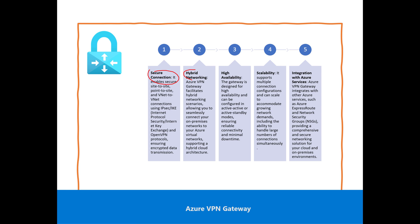Azure VPN Gateway also offers high availability — the gateway is designed for high availability and can be configured in active-active or active-standby mode, ensuring reliable connectivity and minimal downtime. It also supports scalability, with multiple connection configurations that can scale to accommodate growing network demands, including handling large numbers of connections simultaneously.